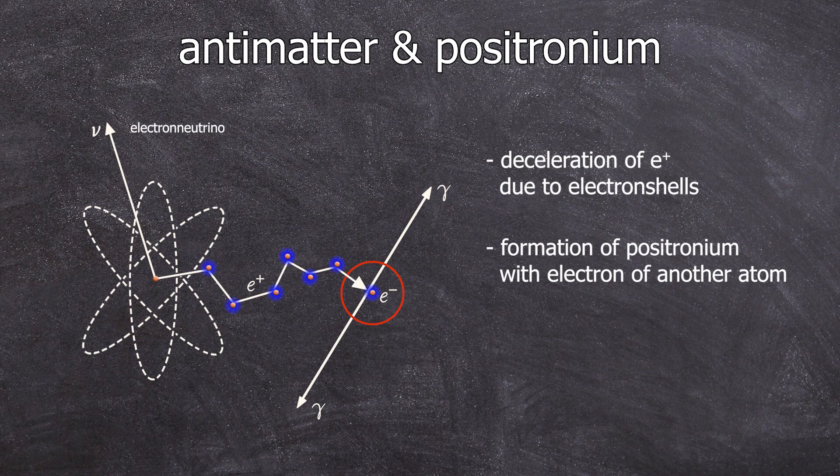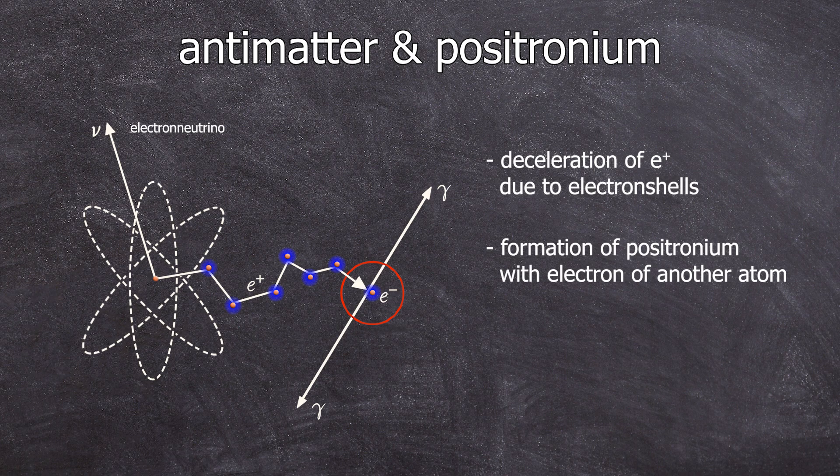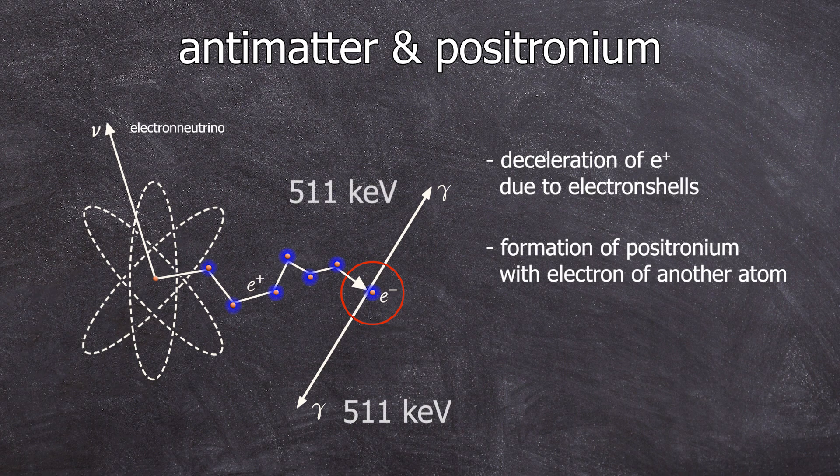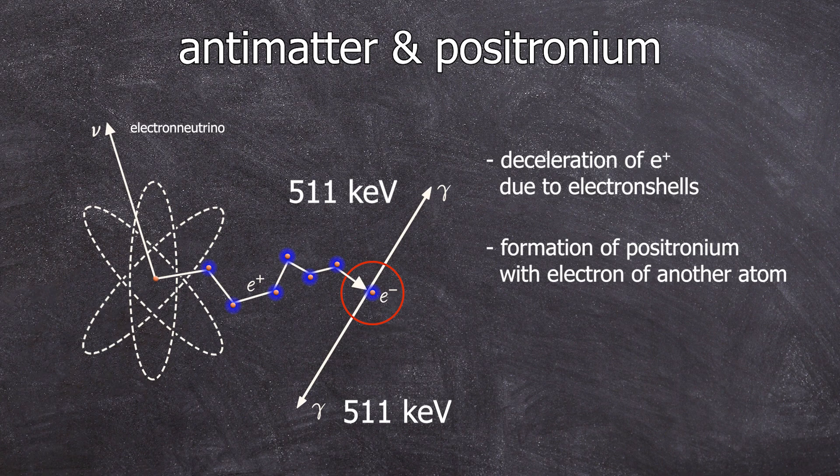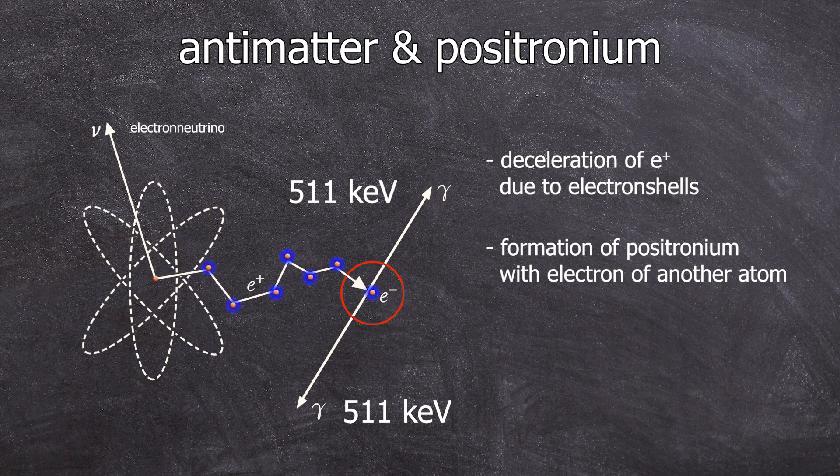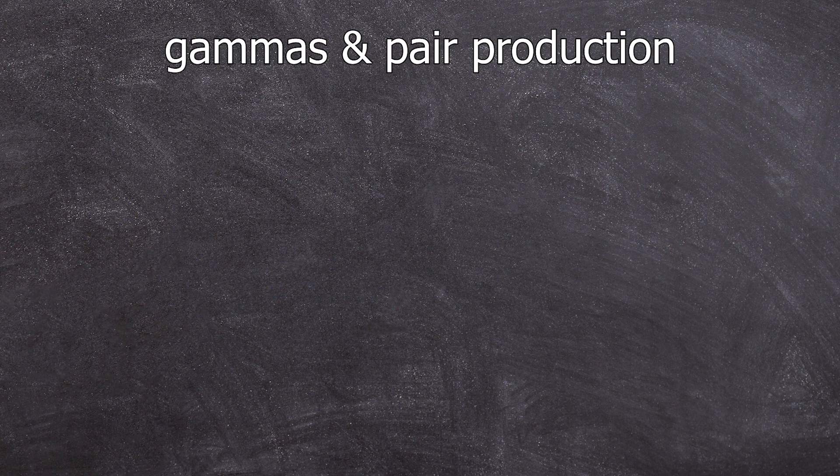This positronium then decays with a half-life of 0.125 nanoseconds into two gamma photons, which are emitted at 180 degrees of each other with an energy of 511 kilo electron volts. So do we have definite proof that the positrons from the potassium-40 decay caused this marked 511 kilo electron volt signal that I marked earlier? No, I'm sorry.